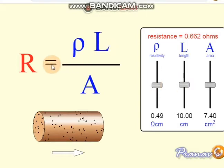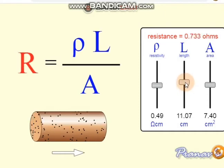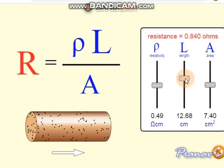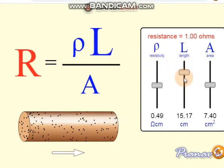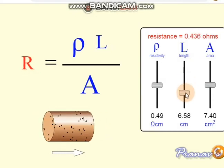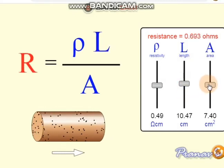What if we increase the length of the conductor? Since length is directly proportional to resistance, when we increase the length, the resistance also increases. As you can see here, when the length is 20 centimeters the resistance is 1.32 ohm. When you decrease the length, the resistance also decreases — that means they are directly proportional.